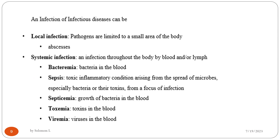Infection can be local or systemic. In local infection, pathogens are limited to a small area of the body. In systemic infection, an infection spreads throughout the body via blood or lymph, because once blood or lymph is affected by pathogens, the infectious agents are circulated throughout the body.